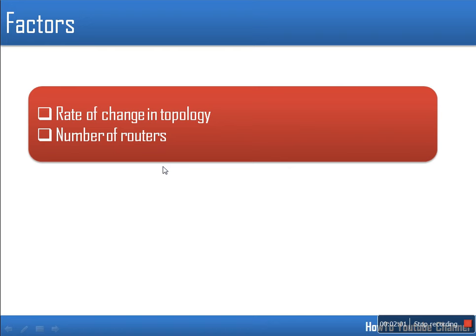The thing is that if the rate of changes in topology is higher, more updated information has to be circulated. And if the number of nodes in the network is more, then more and more information has to be sent in the network. GPSR actually points out these two issues.